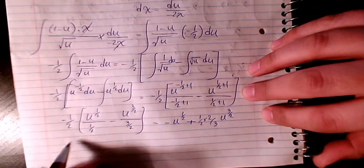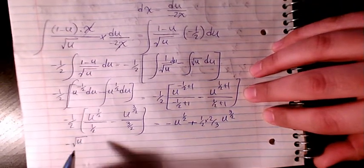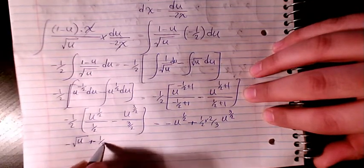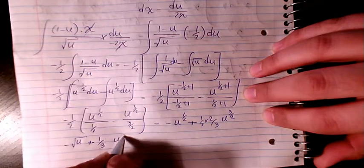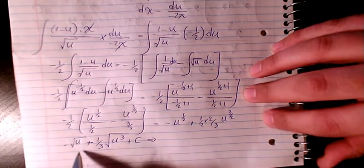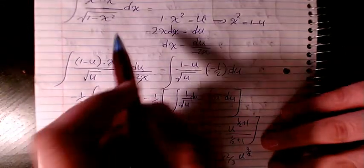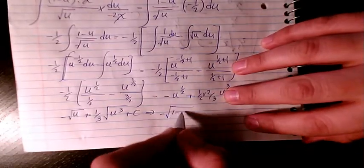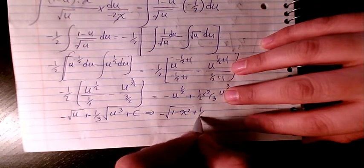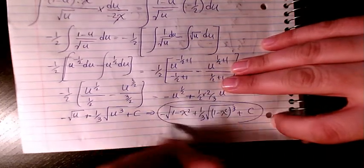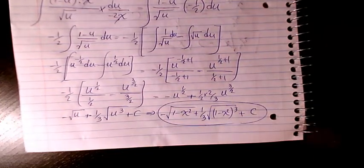So it will be negative root u plus 1 third of u times square root of u, plus a constant. Then substituting back — it was u equals 1 minus x squared — I will write: negative square root of 1 minus x squared plus 1 over 3 times 1 minus x squared to the power of 3 over 2, plus C. That will be the final answer.